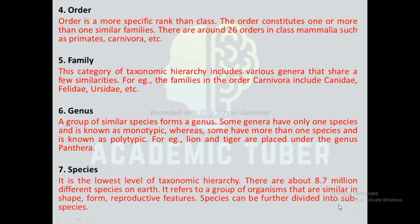Species: It is the lowest level of taxonomic hierarchy. There are about 8.7 million different species. It refers to a group of organisms that are similar in shape, form, and reproductive features. Species can be further divided into subspecies.